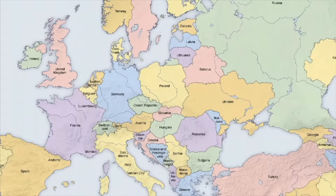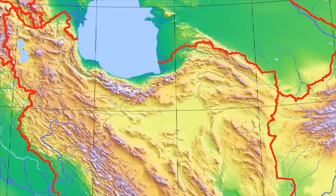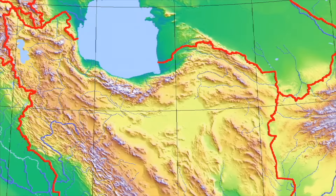A map is a great tool. It helps to show us where we are. A map is a drawing of an area. There are many different kinds of maps. You'll often see maps that show areas of land. A geographical map can show things like water, mountains, and roads. But really, a map can be any kind of place.